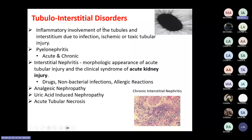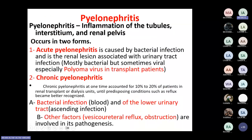The first and most important part of tubulo-interstitial disease is pyelonephritis: inflammation of the tubules, interstitium, and renal pelvis. It occurs in two forms — acute and chronic. Acute is caused by bacterial infection, usually associated with lower urinary tract infection that ascends to upper urinary tract infection. If the patient has diabetes or poor immunity, they may develop acute pyelonephritis. It may also be caused by the polyoma virus, especially in renal transplant patients — if not detected early, it may lead to transplant rejection.